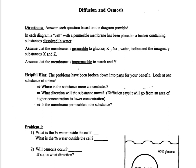The first thing you need to do when you see these problems is to read the directions and make sure you see a couple of things up top. It says assume that the membrane is permeable to glucose, K+, Na+, and then they list a whole bunch of stuff. The word permeable means that those things can go through. So the membrane is permeable to all of these molecules and they can move through the membrane easily.